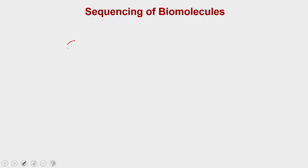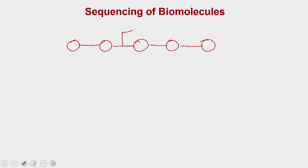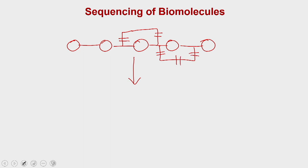Whether it is protein or DNA, the sequencing technique for a biomolecule always follows a flow chart. You have a biomolecule made up of many monomers associated with each other, and sometimes biomolecules also have intramolecular bondings — especially important when talking about proteins. If you would like to sequence this biomolecule, first you have to destroy all intramolecular bonds, and second, you have to cleave the biomolecule at every monomer junction.